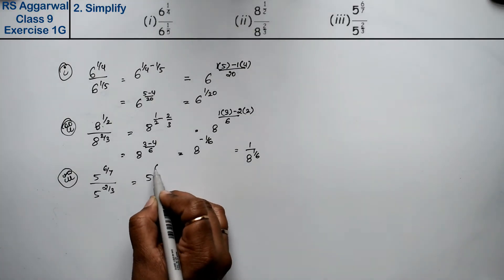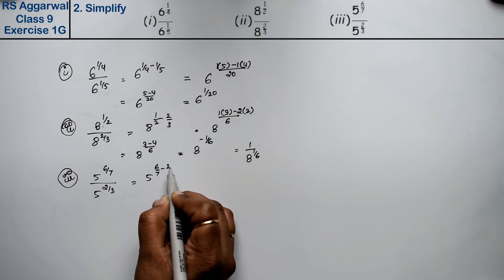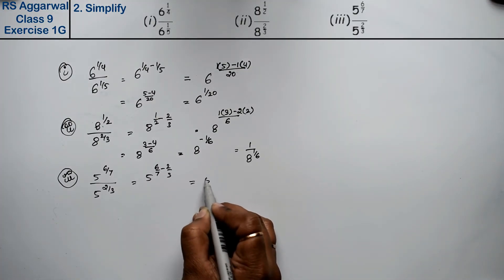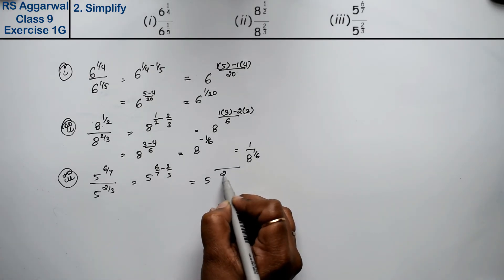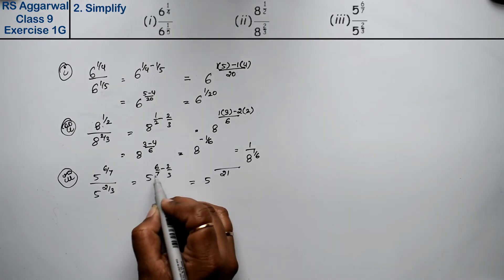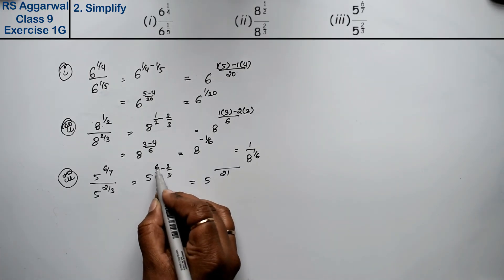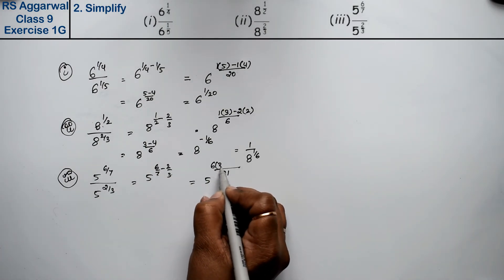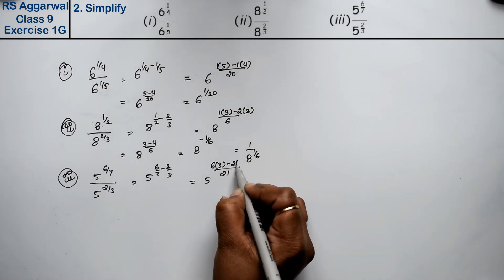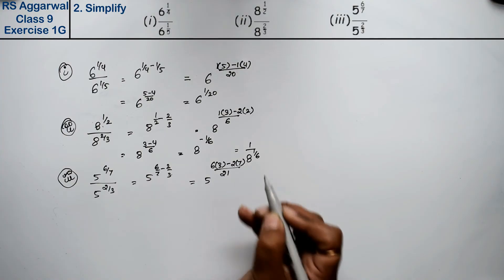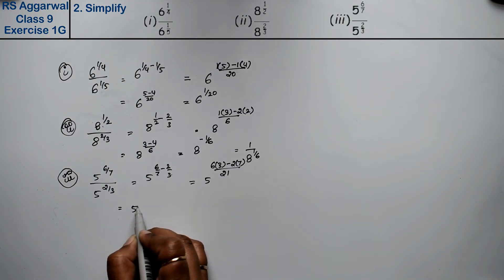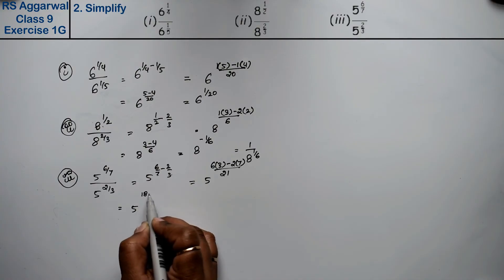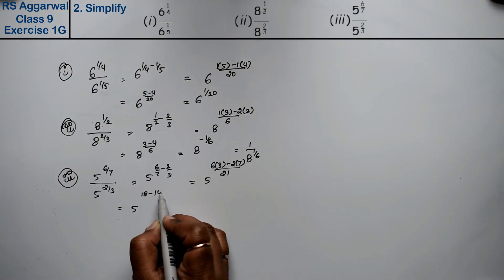Third part is five ki power six upon seven divided by five ki power two upon three. Five ki power kya ho jayegi — six upon seven minus two upon three. LCM aa gaya twenty one. Ab isi multiplication iske saath: six into three minus two into seven. Toh five ki power six three is eighteen minus seven two is fourteen upon twenty one.